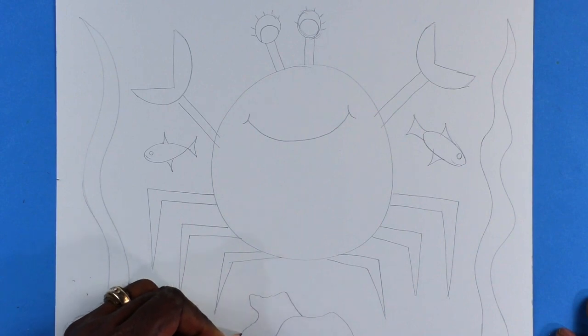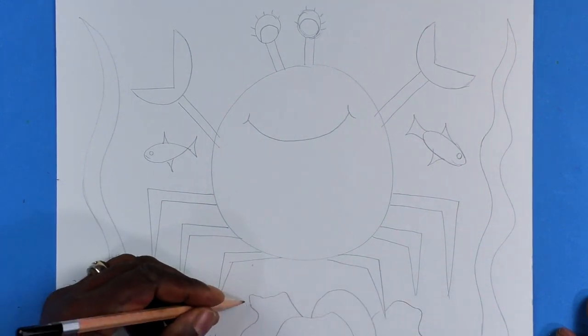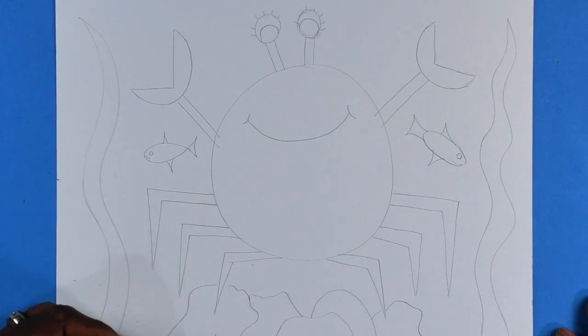How about some rocks at the bottom? Crabs use rocks sometimes to hide in them.